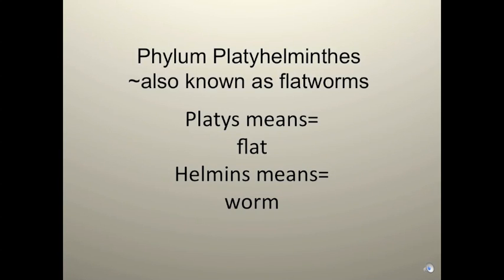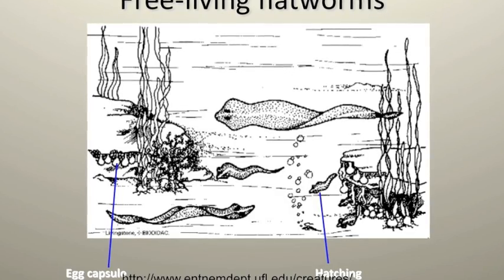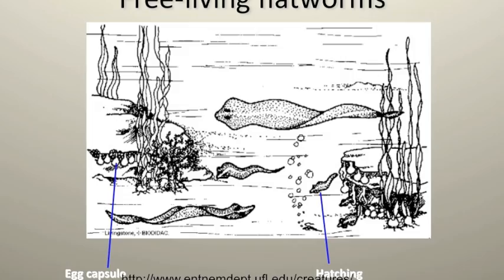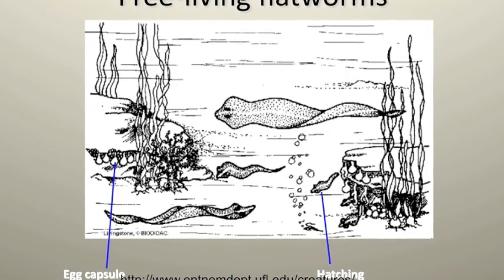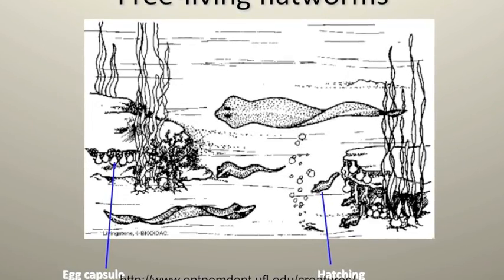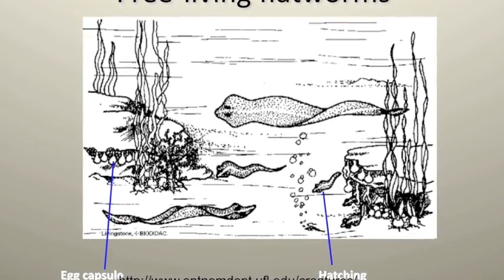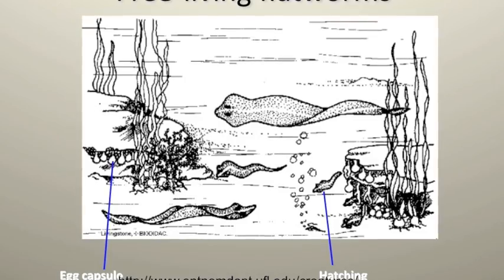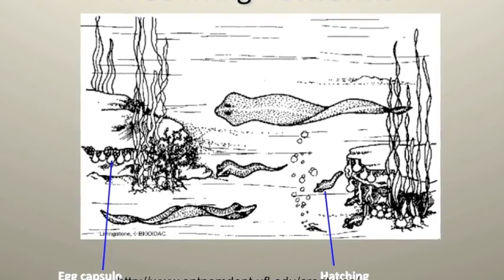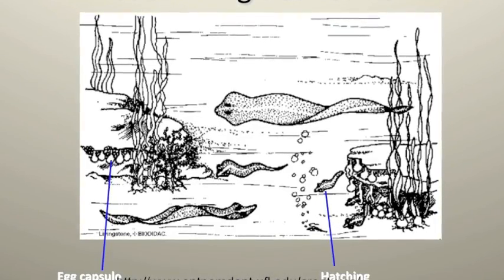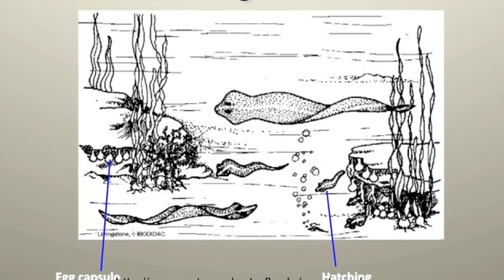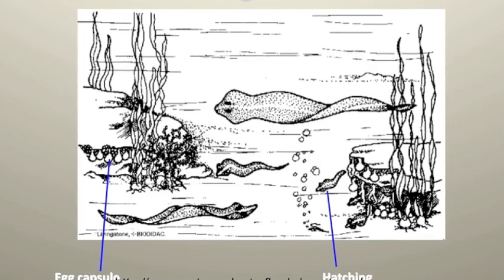Phylum Platyhelminthes, also known as flatworms, derives their name from platus meaning flat and helmus meaning worm. The class Turbellaria are mostly free-living bottom dwellers in fresh and marine environments. They crawl on stones, sand, or vegetation, and get their name from their movement and stirring up the water.